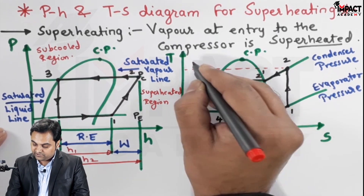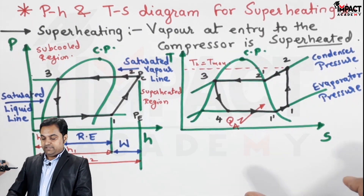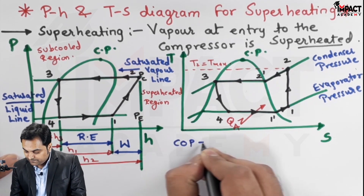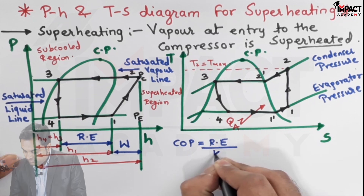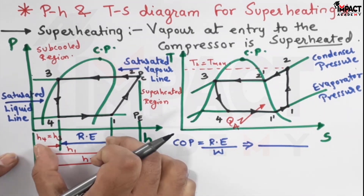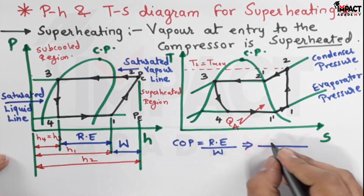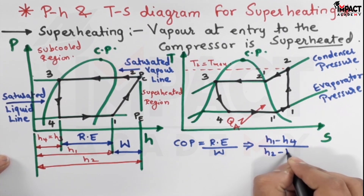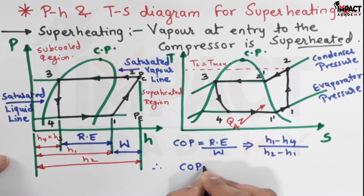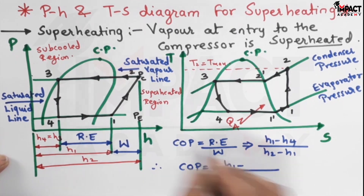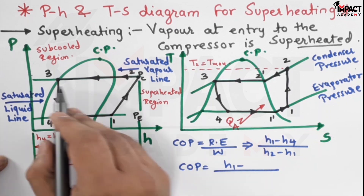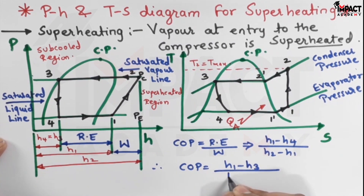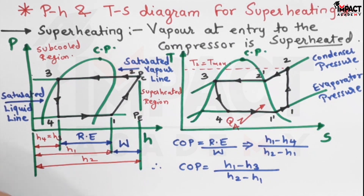The COP formula for this case is: COP equals refrigeration effect divided by work input. The refrigeration effect in the evaporator is h1 minus h4, and the work input to the compressor is h2 minus h1. Therefore the final COP formula is: COP = (h1 minus h3) / (h2 minus h1), since h4 and h3 are equal and it is easier to find values on the saturation curve. These values will be used in problems further.